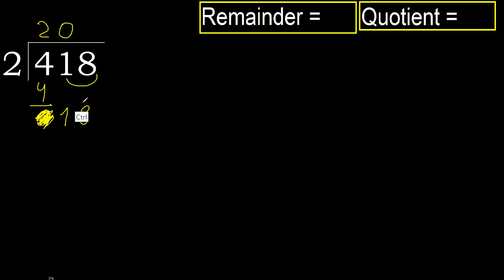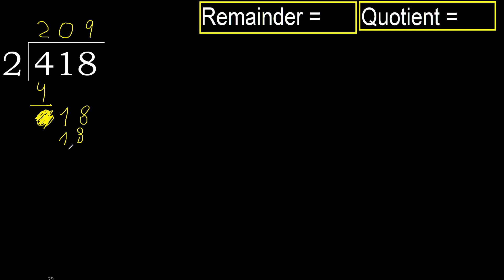2 numbers: 18. 2 multiplied by 9 is 18 — 18 is not greater. Subtract 18 minus 18 equals 0. Next.